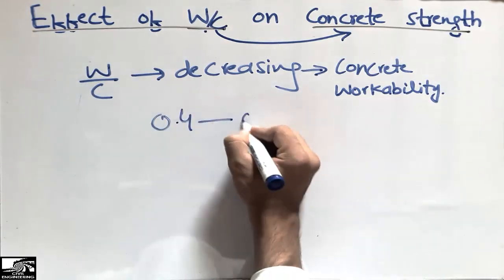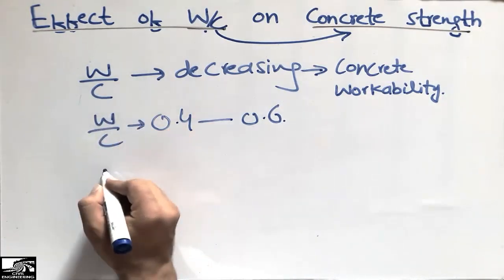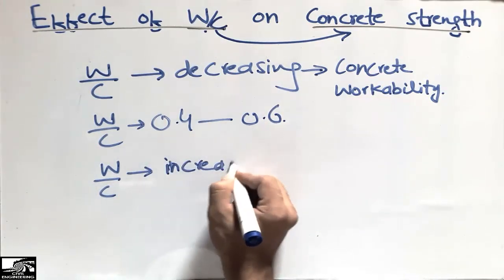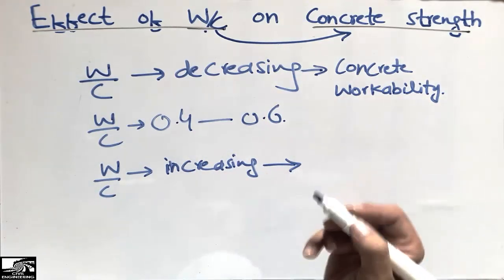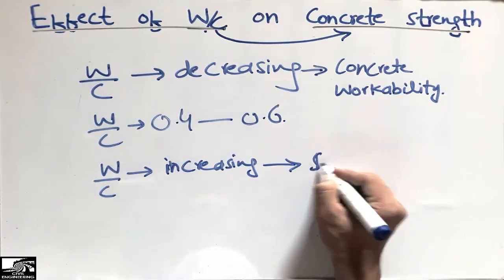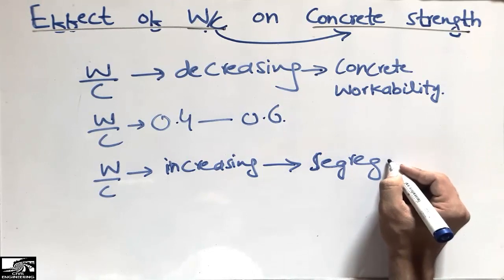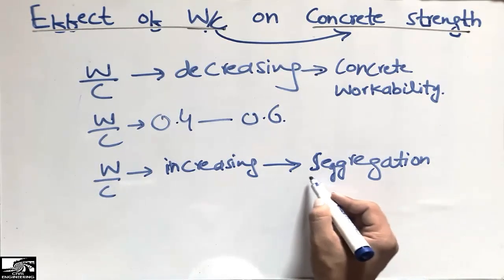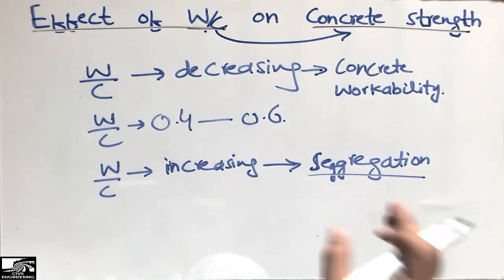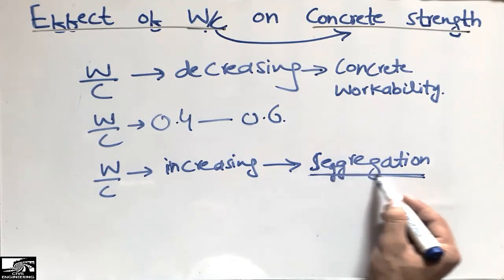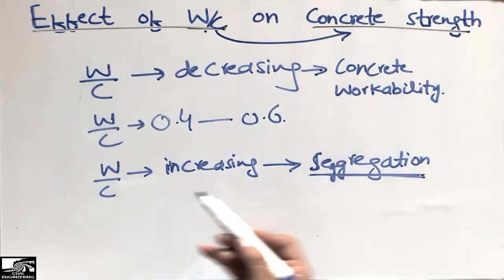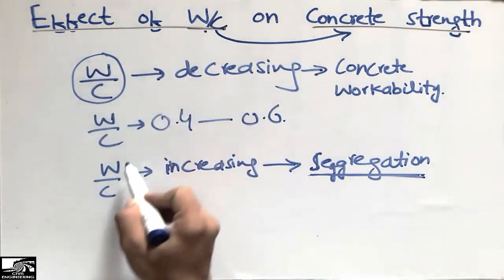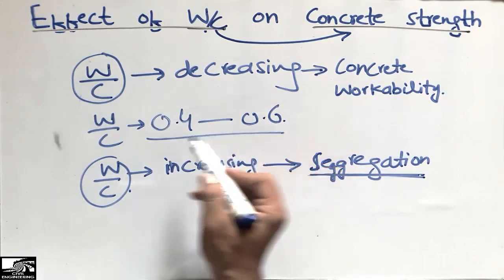If you increase the water-cement ratio beyond 0.6 — for example, to 0.7 — there is a problem of low concrete strength and segregation. Segregation means the coarser aggregate will fall down during site execution of the concrete, creating structural problems. The concrete will have low strength and will not be sufficient to resist the load in the field. The general range remains 0.4 to 0.6.